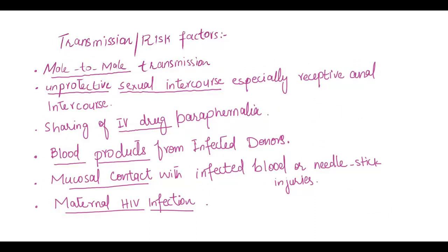Transmission and risk factors: Male-to-male transmission is the most common route of transmission in the US. Other risk factors include unprotected sexual intercourse, particularly receptive anal intercourse, sharing of IV drug paraphernalia, blood products from affected donors, percutaneous contact with infected blood or needle stick injuries, and maternal HIV infection.